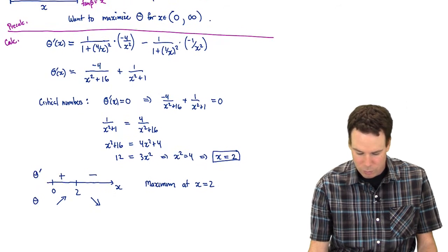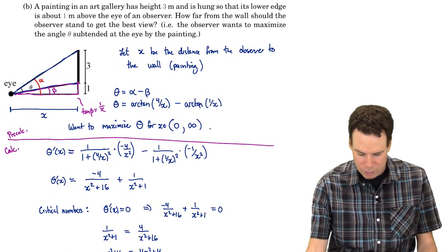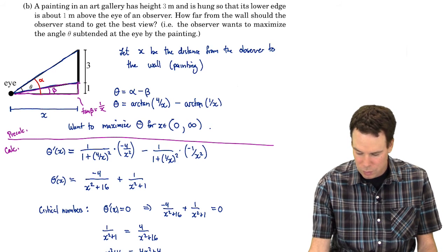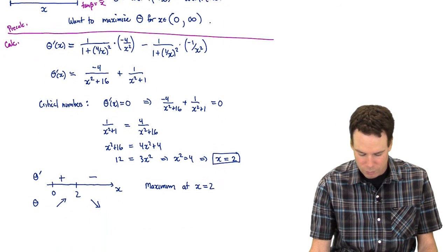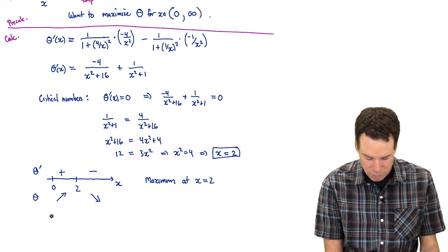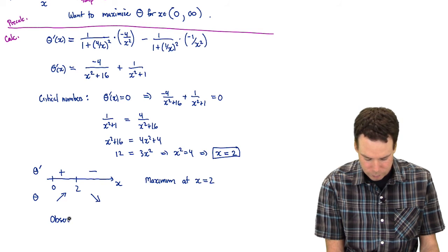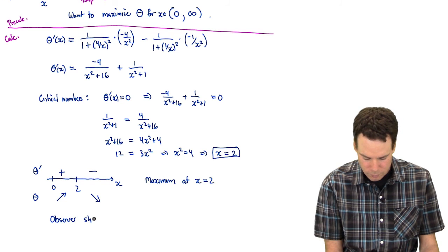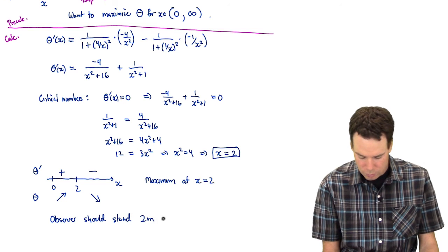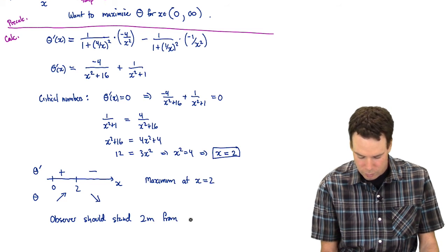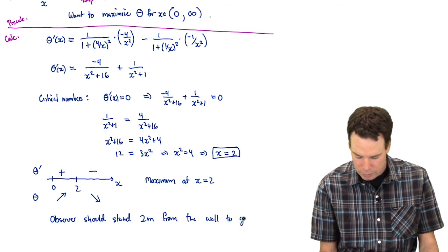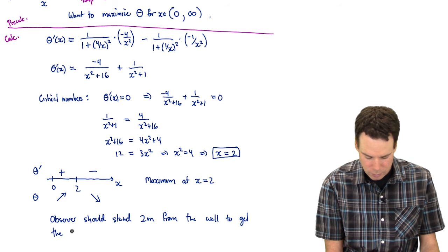Let's go back and reread the question. Do we need to find the value of theta? How far from the wall should the observer stand to get the best view? So we've already found that. We've maximized the function theta, found its maximum value occurs at 2. So the observer should stand 2 meters from the wall to get the best view.